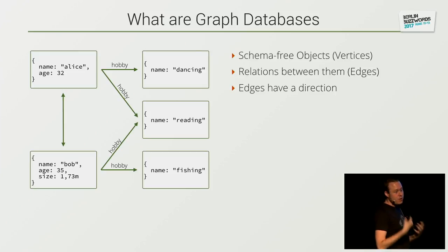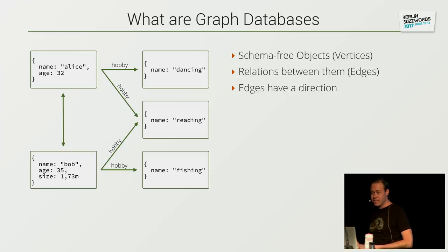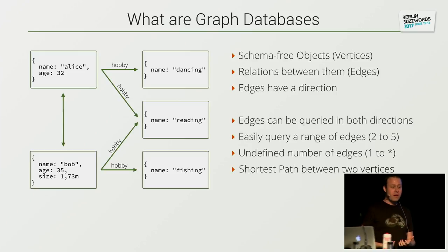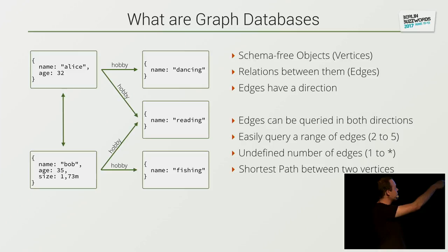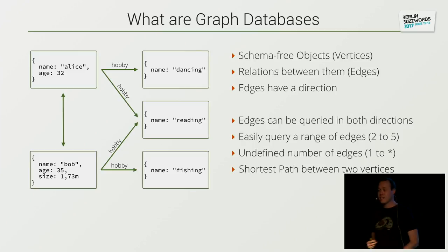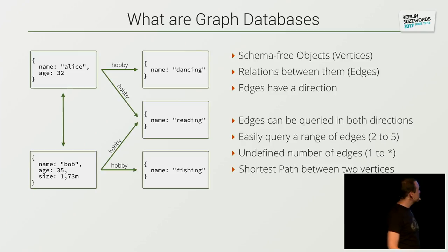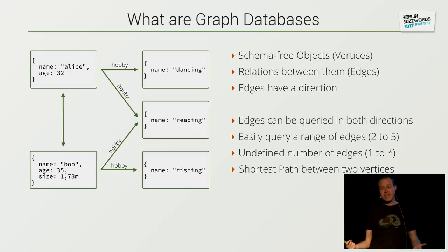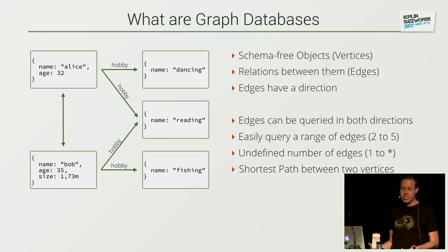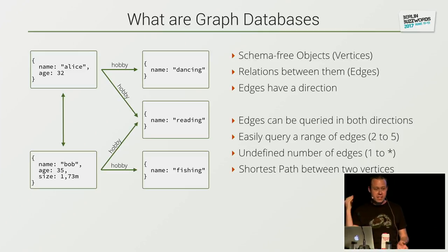That is pretty much the same thing as relational databases could do as well, except for the schema-free stuff. But the query mechanisms are totally different from relational world to the graph databases world, because graph databases focus on querying alongside these edges rather than querying inside these documents in a fast fashion. Edges can be queried in both directions — you can go alongside the edge, go backwards, or just say you don't care which direction the edge is, as long as there is some connection.